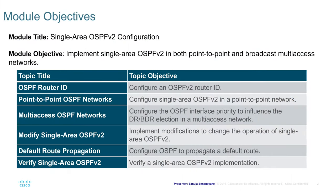In our last module, we went over the fundamentals of Single Area OSPF Version 2. Today we're going to look at how we can implement Single Area OSPF Version 2 in both point-to-point and broadcast multi-access networks. We will cover OSPF router ID, point-to-point OSPF networks, multi-access OSPF networks, how to modify Single Area OSPF Version 2, default route propagation, and how to verify the configuration after implementation.